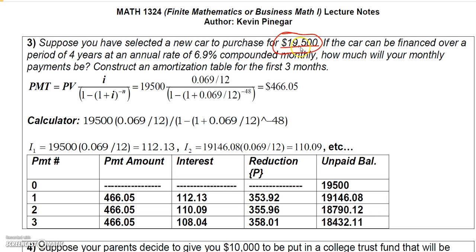Basically, if you had nineteen thousand five hundred dollars cash in the bank, you could just write them a check today and walk away without ever making a payment — that would be the present value if paid off today. Since we're paying it off monthly, we'll actually pay more than that. We're going to use the payment formula for present value annuities.